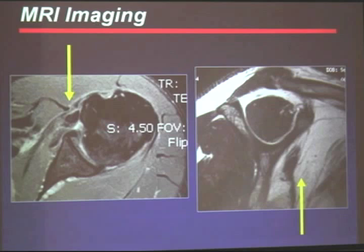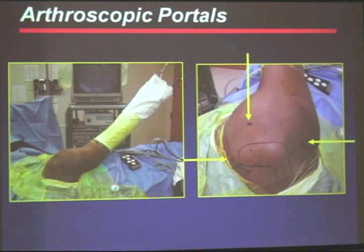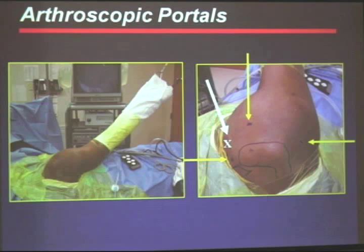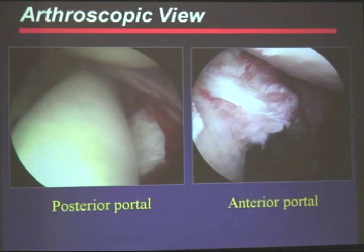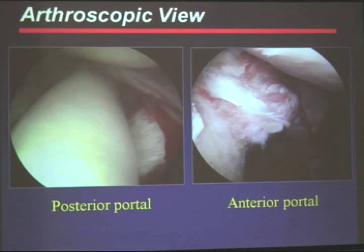When dealing with arthroscopic portals, whether in the beach chair or lateral decubitus position, the setup is the same: posterior, lateral, and anterior portals. We'll need additional anterior portals to place anchors because we're going to the lesser tuberosity, not the greater tuberosity. There's debate whether to use the posterior portal for an articular view or to enter the subacromial space via lateral or anterior portal to look down the subscapularis. The repair technique is the same regardless — it's just about how well you can visualize the lesser tuberosity and the subscapularis.